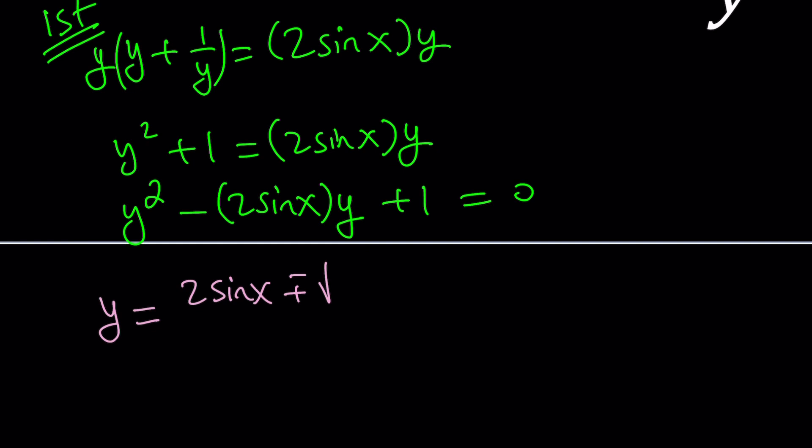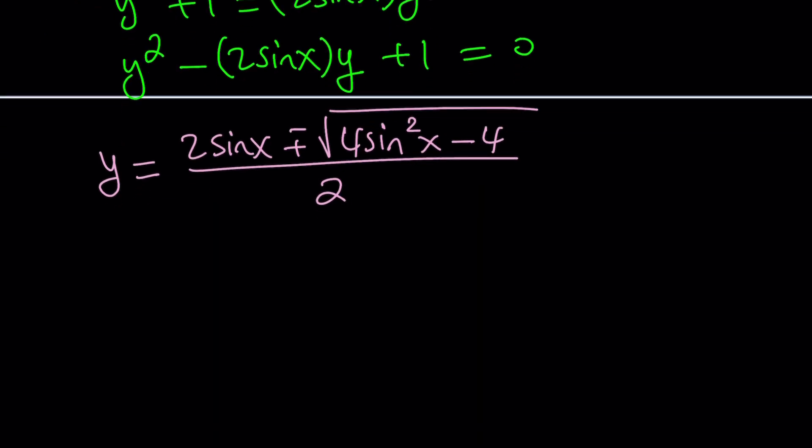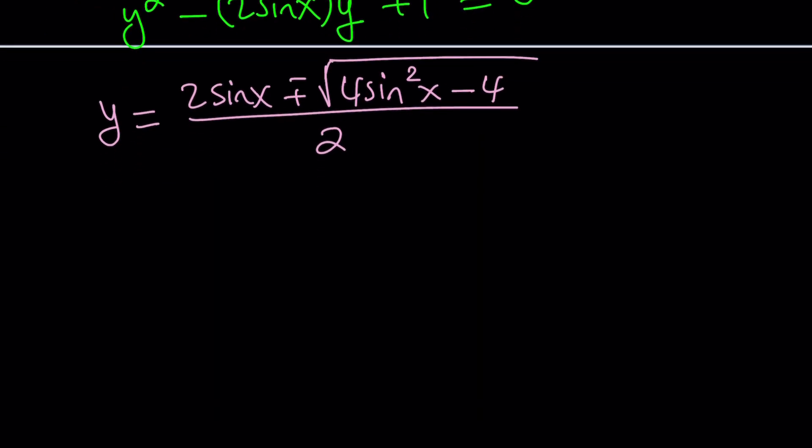Negative B. Inside the radical, you have B squared minus 4AC, which is the discriminant or delta. It's going to be 4 sine squared X minus 4AC. A is 1, C is 1, so it's just 4. And all of that is divided by 2A, which is 2. Awesome. Now, this can be factored inside the radical. So we can go ahead and factor out a 4, but that becomes a 2 on the outside.